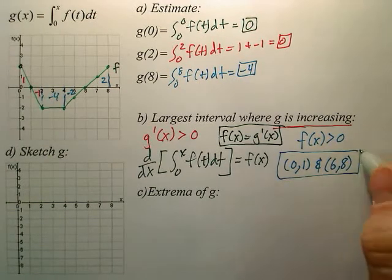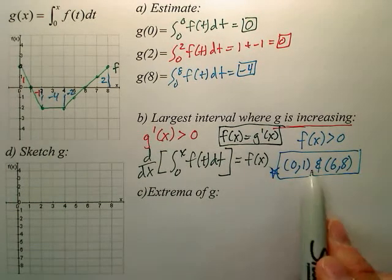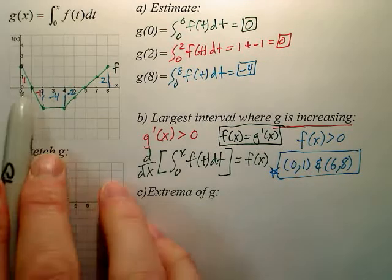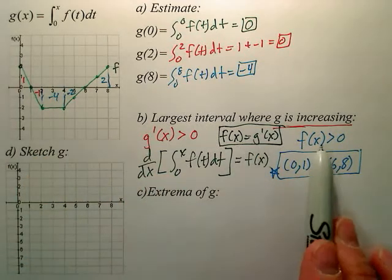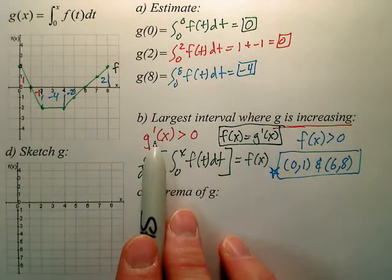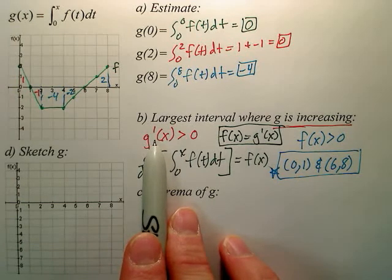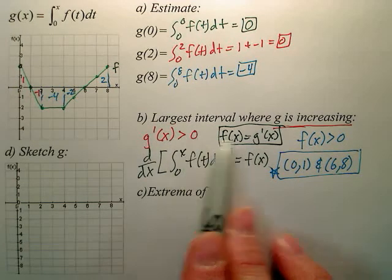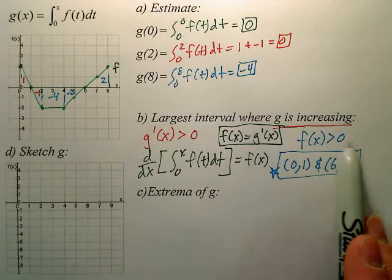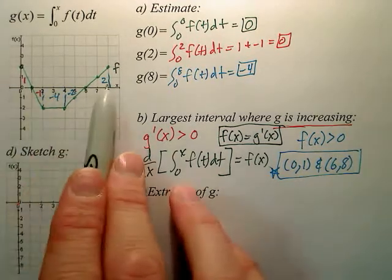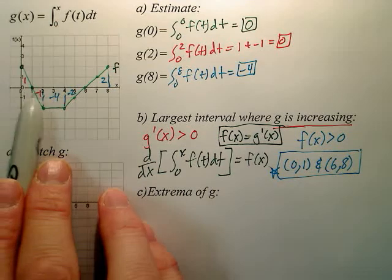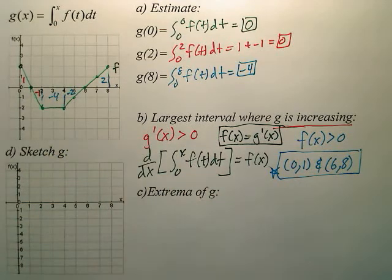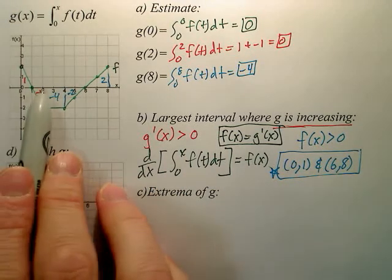Those are your two intervals right here for where the graph is above the x-axis. So instead of looking for g prime greater than 0, we're looking for f of x greater than 0. And f of x is this function. So we're looking for where the function is above the x-axis. And those would be from the interval 0 to 1 and 6 to 8.